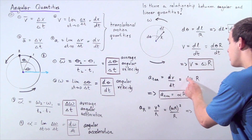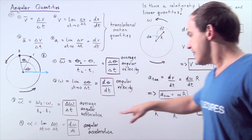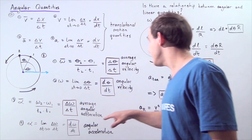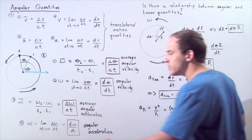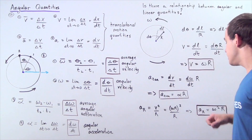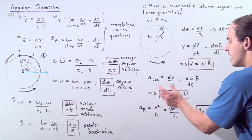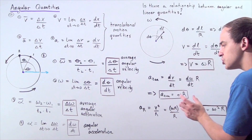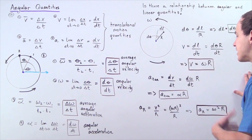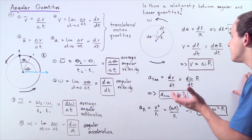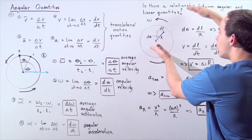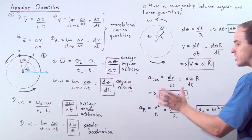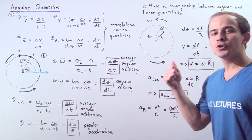Since d omega divided by dt is simply our instantaneous angular acceleration alpha, we get that tangential acceleration equals alpha times R. Once again, as we move further away from the axis of rotation, the tangential acceleration increases.